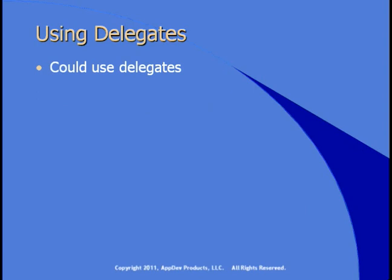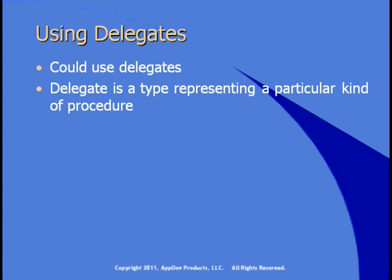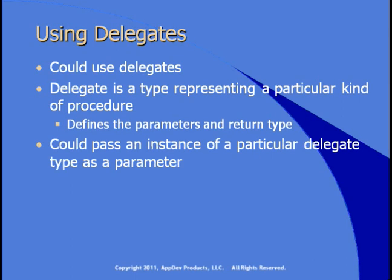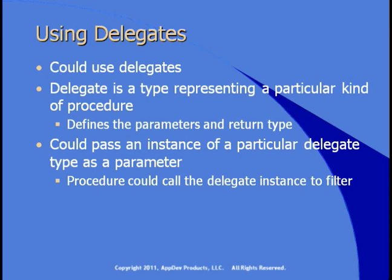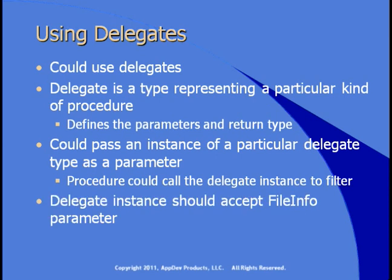You could use delegates. A delegate is a type that represents a particular kind of procedure — it defines the parameters and the return type on a procedure. You could pass an instance of a particular delegate type as a parameter to your file searching procedure, and the procedure could then call the delegate instance to filter the return values. In our case, the delegate instance should accept a FileInfo as a parameter so it can look at each file and determine whether or not to include it.